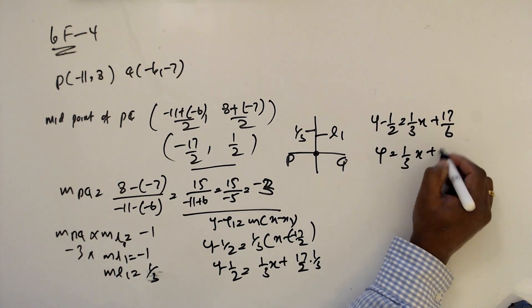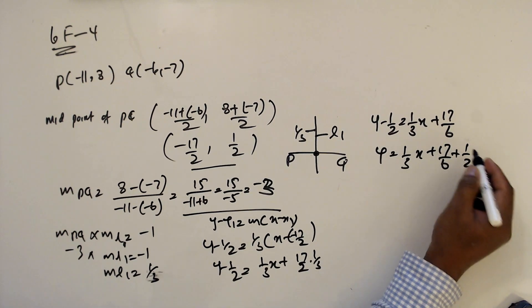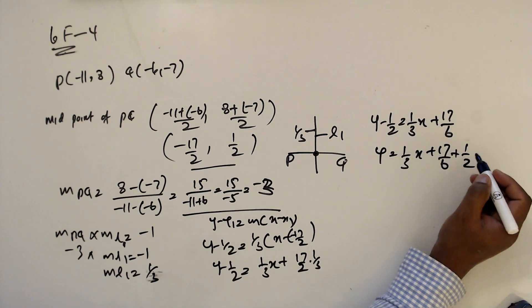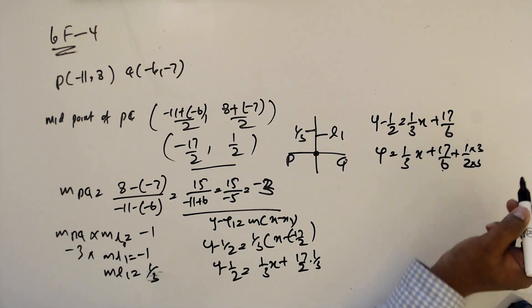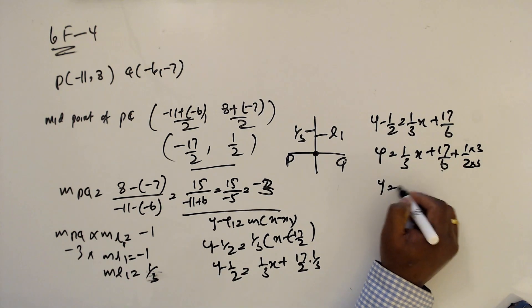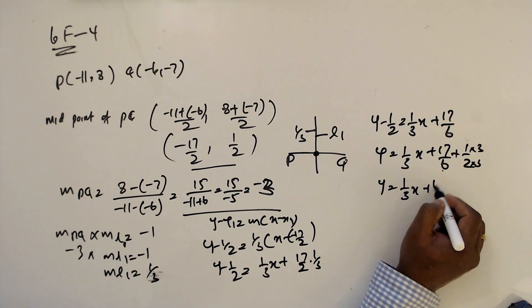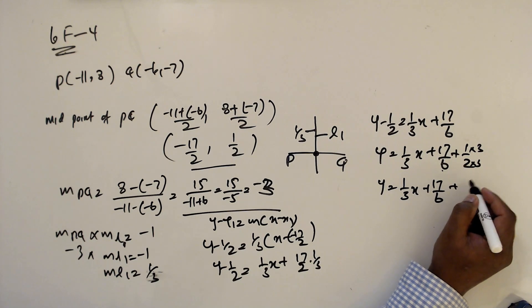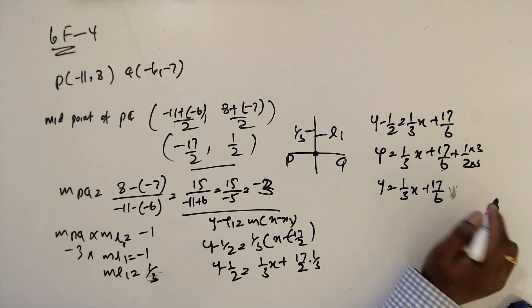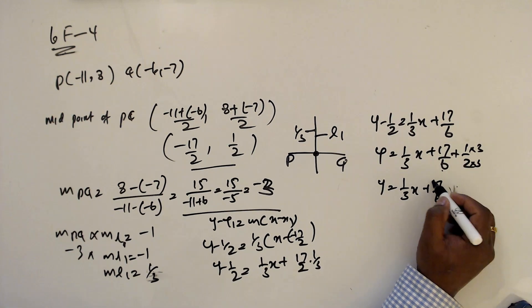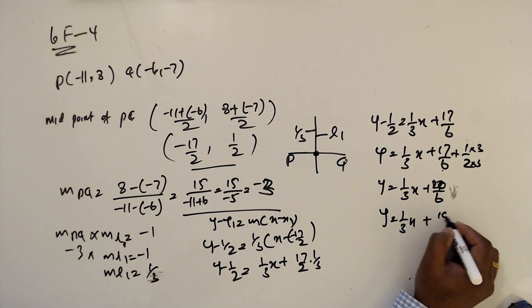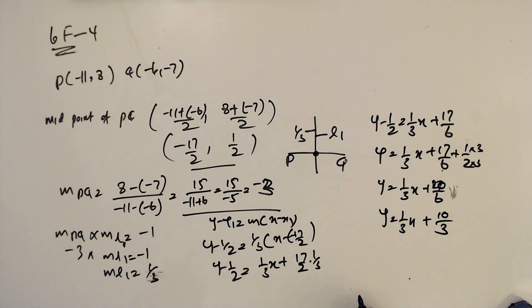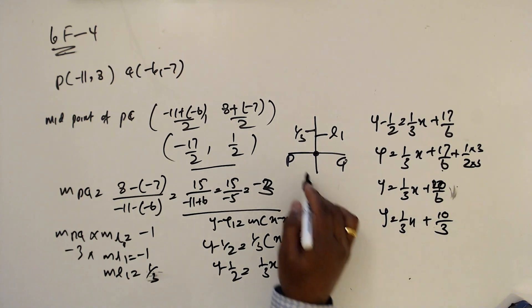Simplifying: y minus one half equals 1 over 3 x plus 10 over 3, so y equals 1 over 3 x plus 10 over 3. This is the perpendicular bisector of PQ.